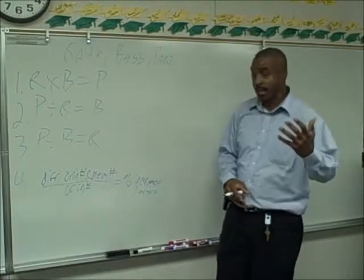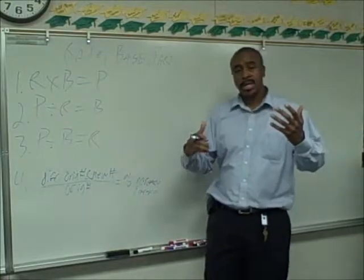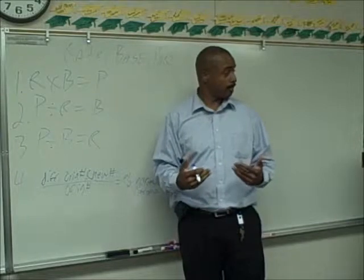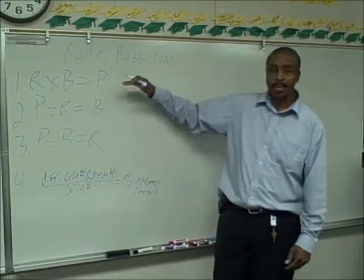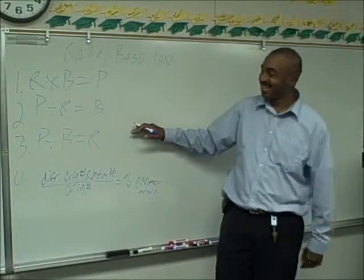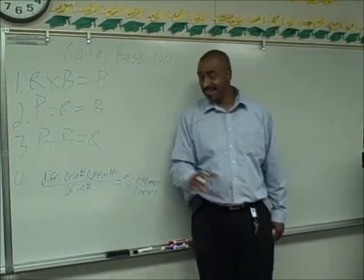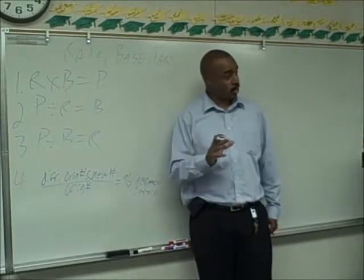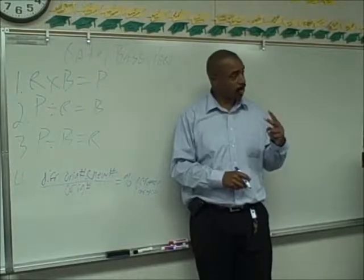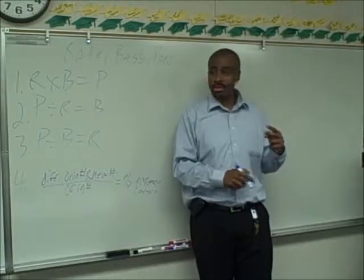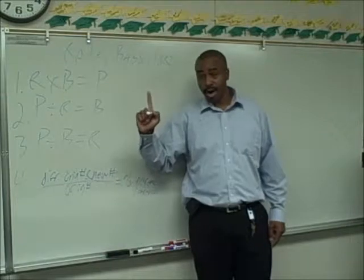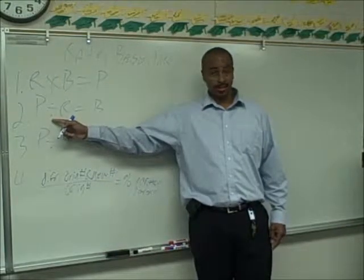So if you have the part, then you're automatically going to divide it by the other number that's in the problem. If you cannot remember these four formulas, that is the way to do it. If you have the rate and the base together, you're always multiplying. If you have the part, you're always dividing.